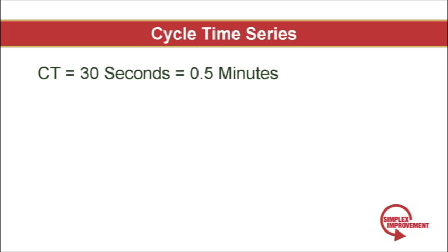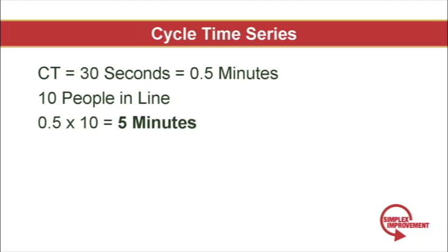So if I want to know how long I'll wait in line in this steady state system, it's 0.5 minutes per customer times 10 customers in line. Little's Law shows that I can expect to wait 5 minutes if I'm the 10th person in line. This is the relationship between cycle time and lead time.